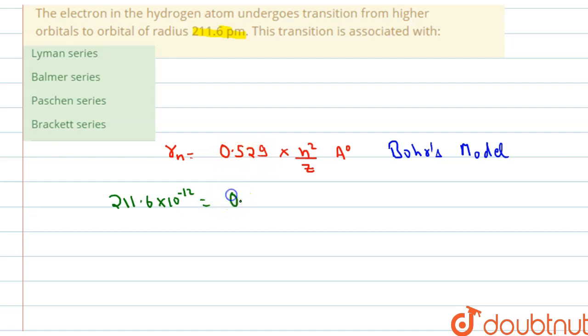So this is 0.529 into n. We don't know about the n, so we have to just write it. And Z for hydrogen, the atomic number is 1 here. And the angstrom will convert this angstrom into meter as well, so this is equal to 10 to the power minus 10 here. So now we solve this.